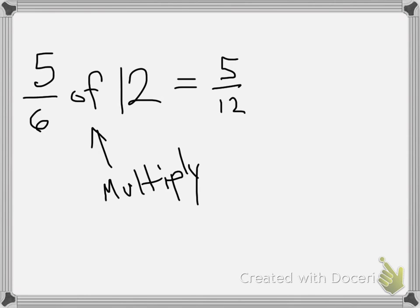So 5/6 times 12. But notice how 12 is not a fraction—it's a whole number. So we can put a 1 underneath because it's a whole number. We can always put a 1 in the bottom every time it's a whole number.